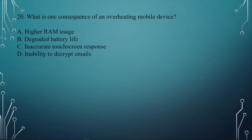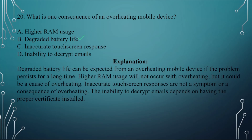Question number twenty: What is one consequence of an overheating mobile device? A. Higher RAM usage. B. Degraded battery life. C. Inaccurate touch screen response. D. Inability to decrypt emails. The answer is B, degraded battery life. Degraded battery life can be expected from an overheating mobile device if the problem persists for a long time. The other options don't really apply to overheating.